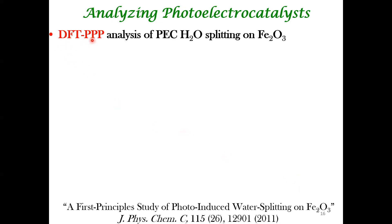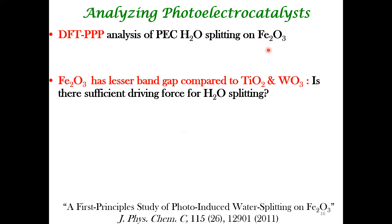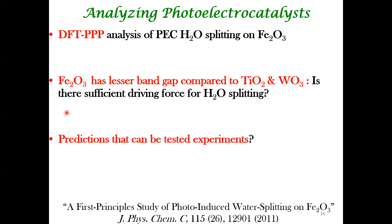The DFT analysis used periodic pseudopotential plane-wave methods — discussed in previous lectures. That analysis covered photoelectrochemical water splitting on Fe₂O₃. The motivation: Fe₂O₃ has a lesser band gap compared to two prominent semiconductors — TiO₂ at 3.2 eV and WO₃ at 2.6 eV. These are inexpensive materials, but because of their high band gaps, their solar energy absorption is limited. We wanted to come up with predictions that could be tested against experiment.